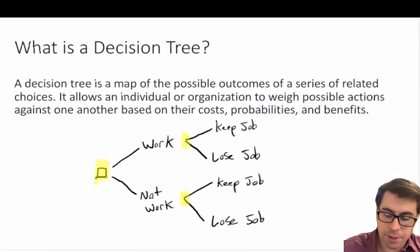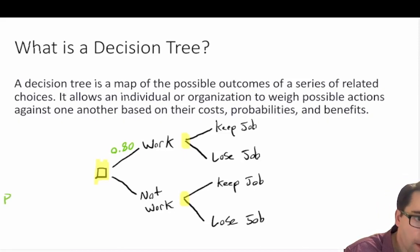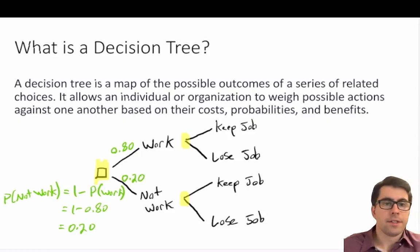Let's say there's an 80 percent chance that you go to work. So the probability you go to work is equal to 0.80. So what does that mean for the probability that you don't go to work? Well, the probability that you don't go to work is equal to 1 minus the probability that you work, which is equal to 1 minus 0.80, which is equal to 0.20. So effectively the probability that you don't go to work is equal to 0.20.